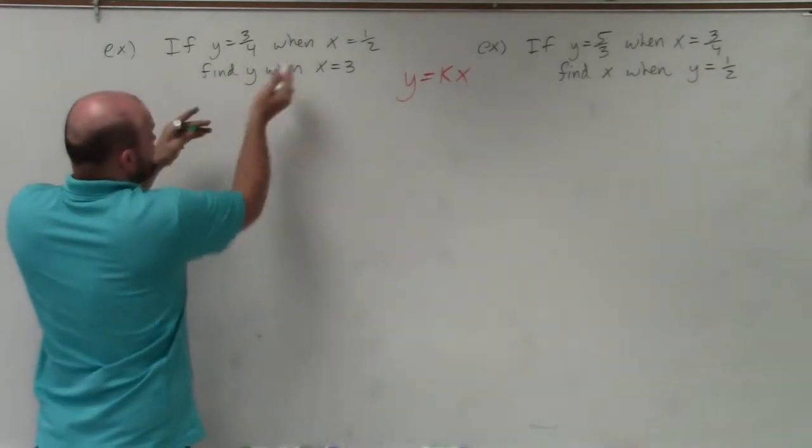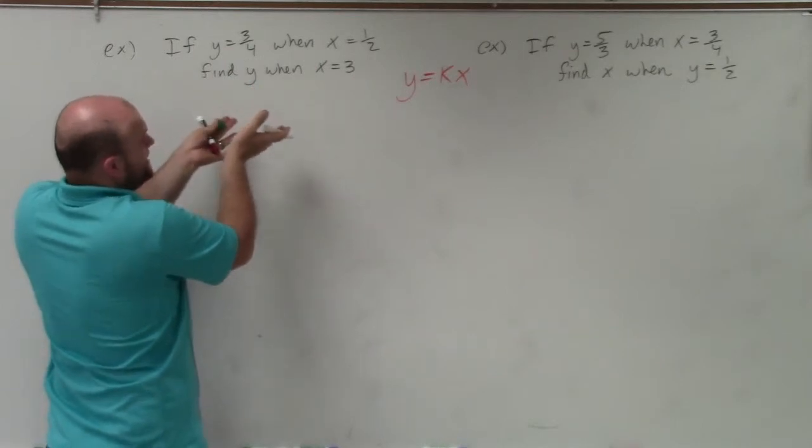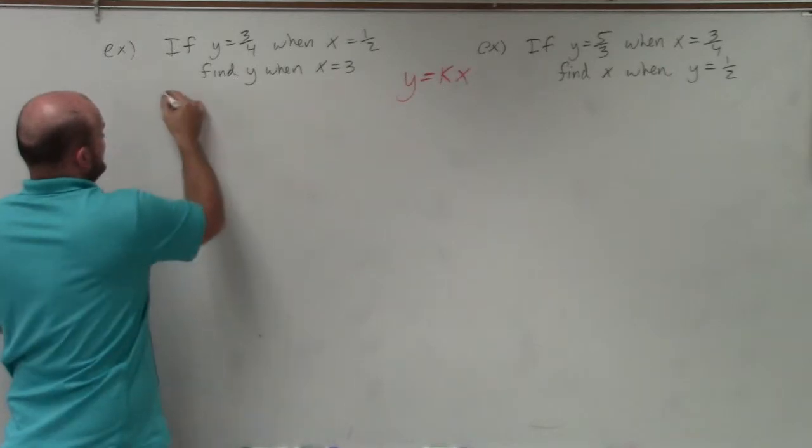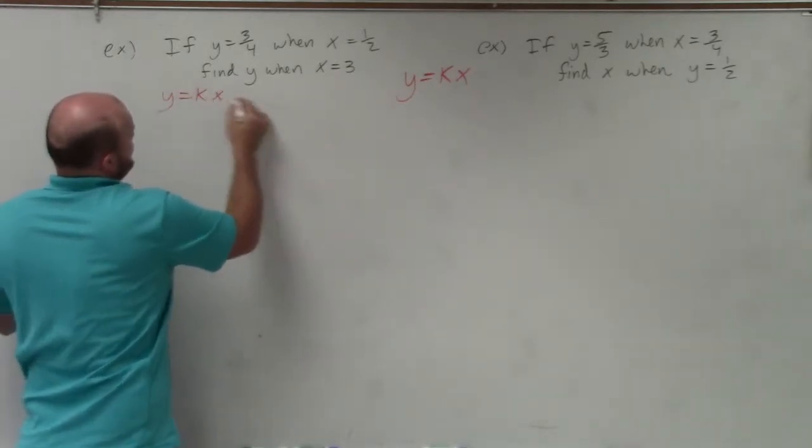So again, the best thing to do is, since they both vary directly with x, their constants are going to be the same. But let's go ahead and write them in direct variation, so therefore we can kind of see how to set this up.